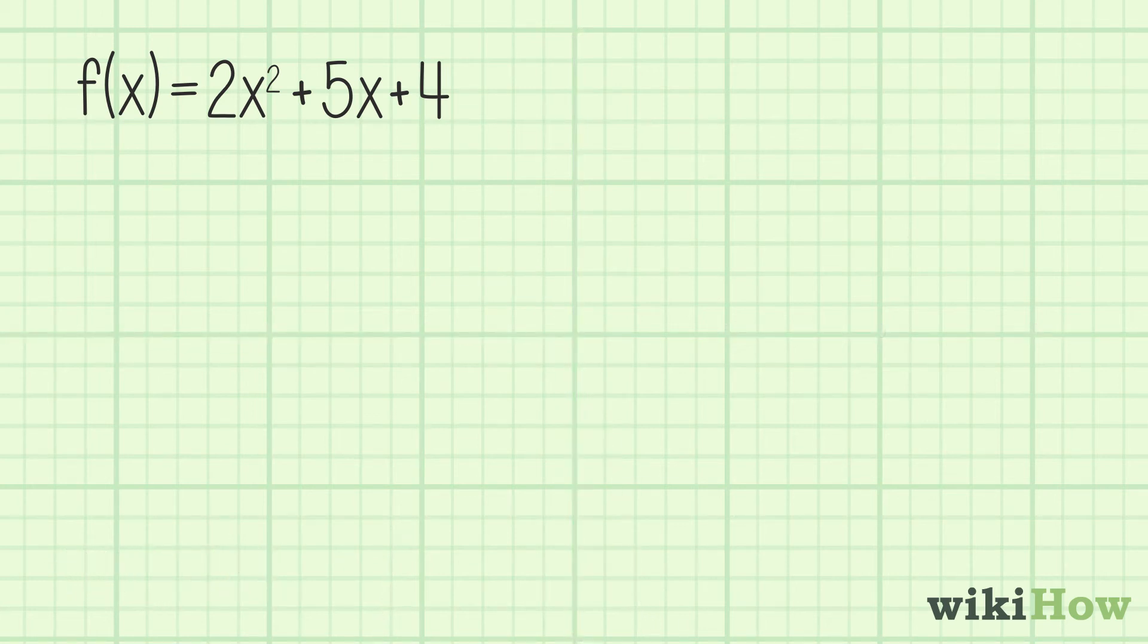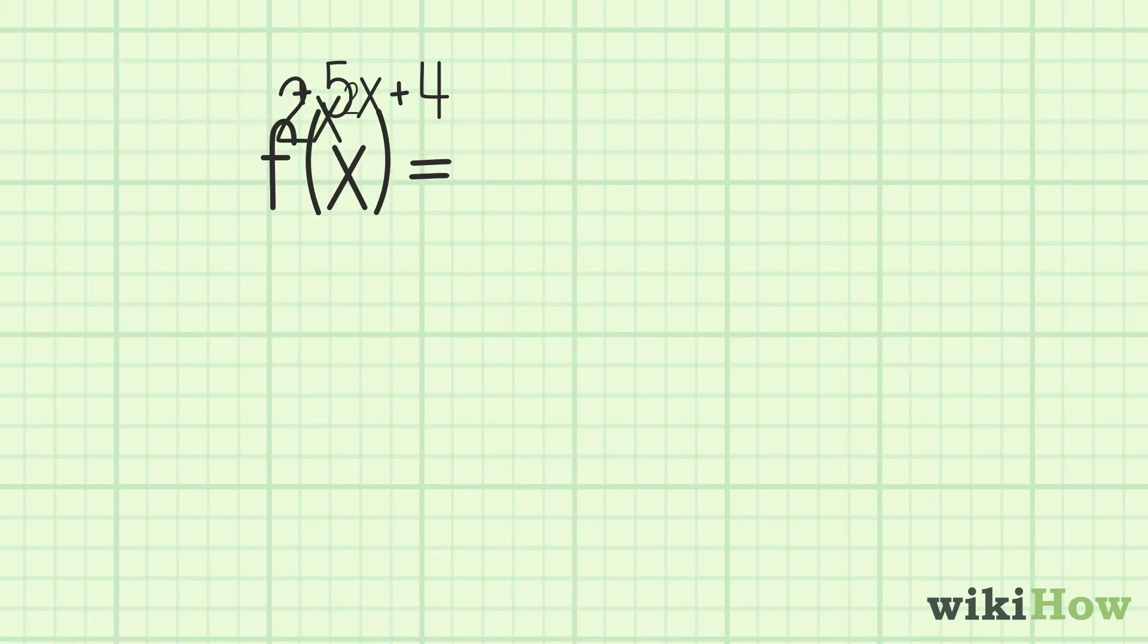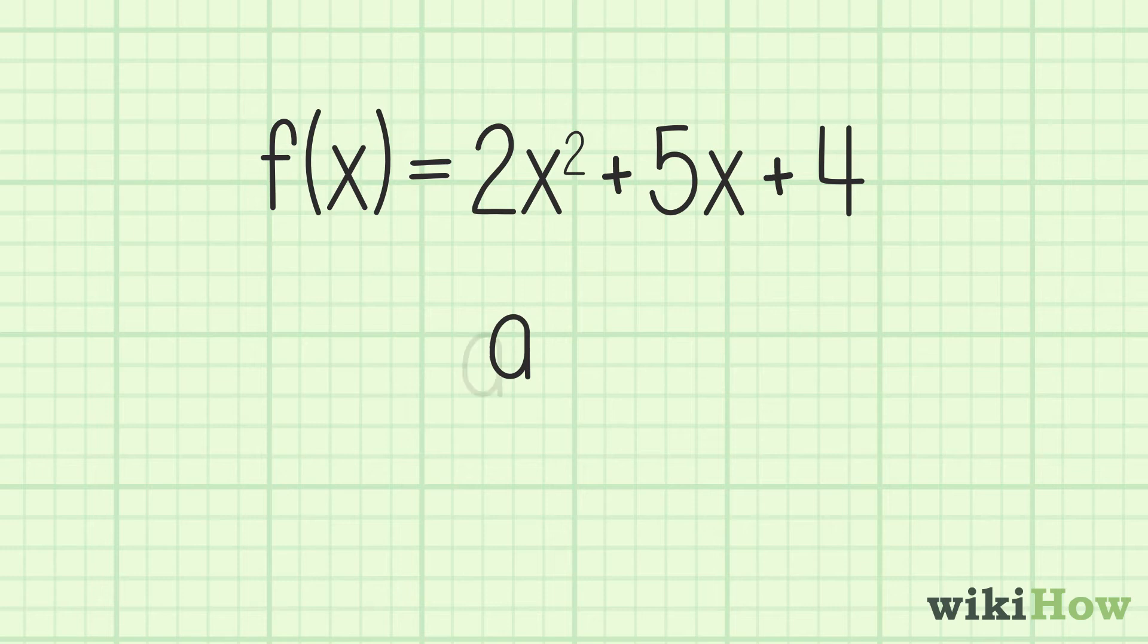In the function f(x) equals 2x squared plus 5x plus 4, the coefficient of x squared is positive, so the parabola opens upward.